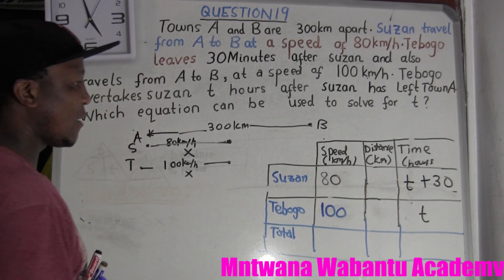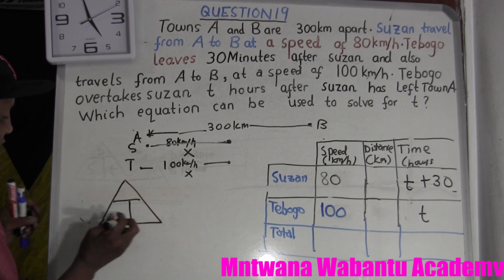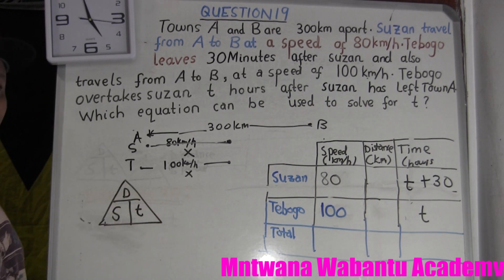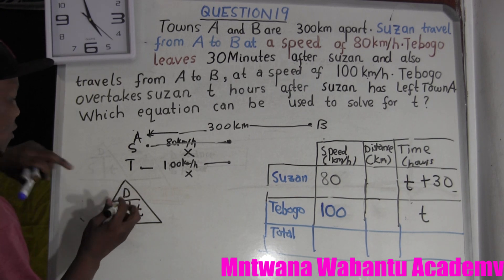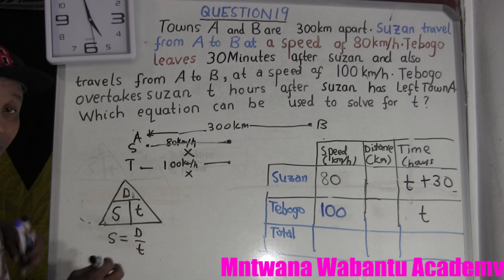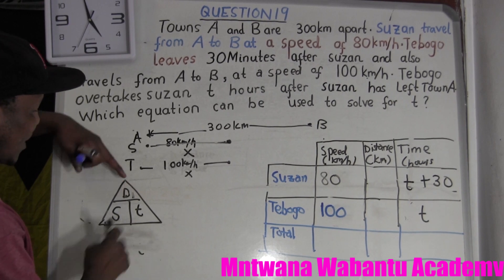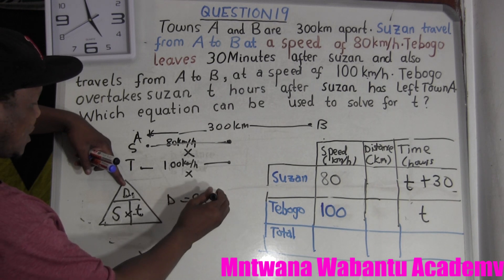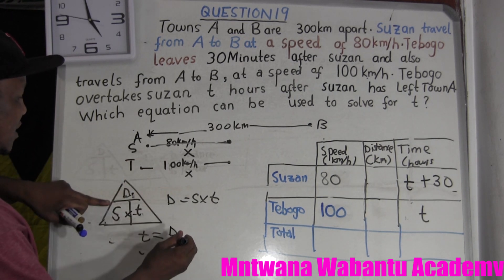Now I want you to get used to the SDT triangle. We say S, D, T. If you want to get speed, speed equals distance over time. If you want to get distance, distance equals speed times time. And if you want to get time, time equals distance over speed.